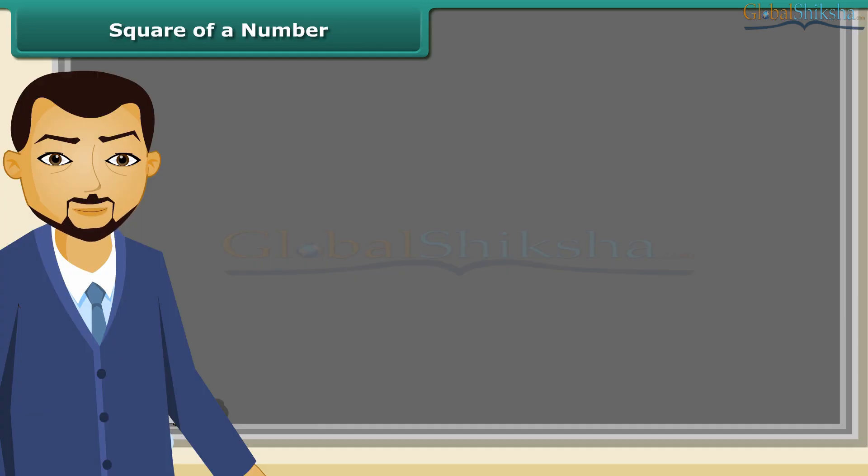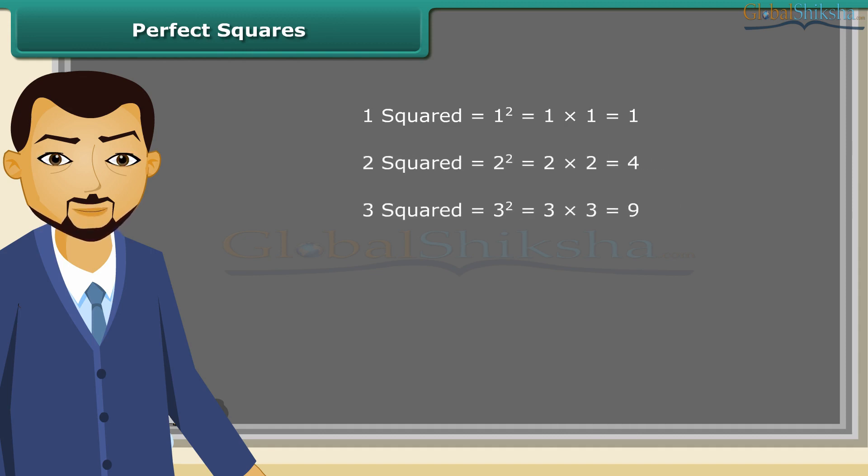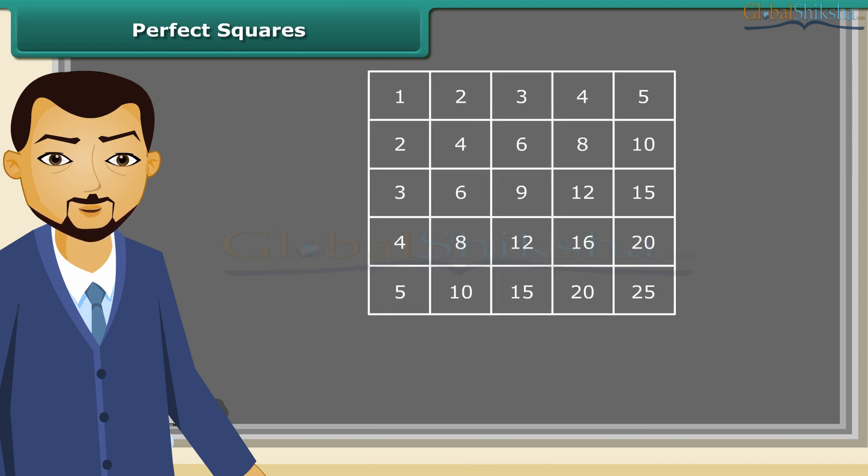Let us first learn about squares. How can we square a number? It is easy. Just multiply the number with itself. You can also write square in the superscript. This tells 4 is multiplied twice which is equal to 16. Let us read: 1 square is 1, 2 square is 4, 3 square is 9, 4 square is 16, 5 square is 25 and so on. We can also find squares on the multiplication table.